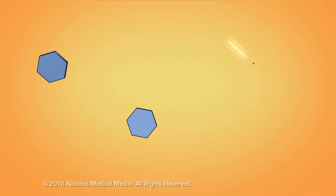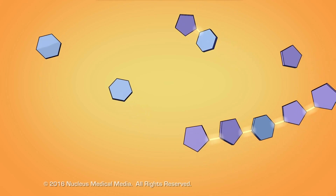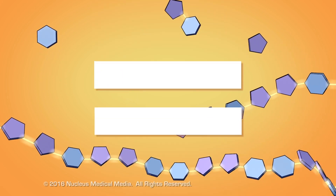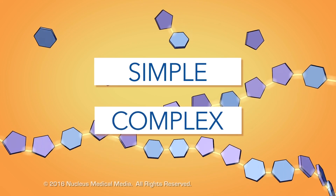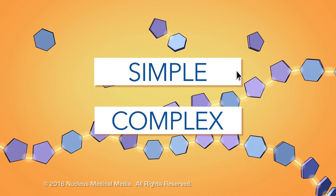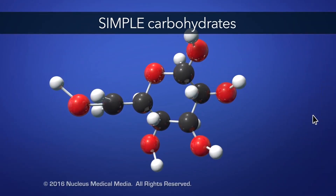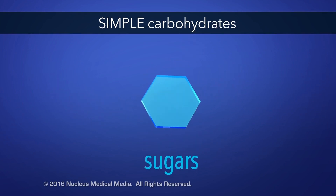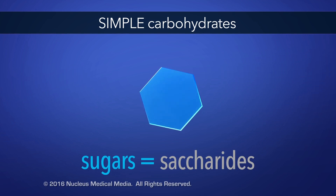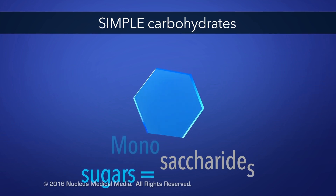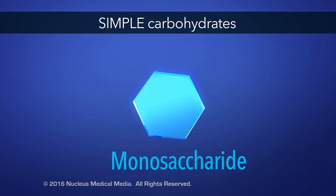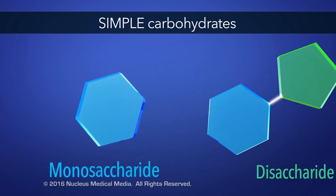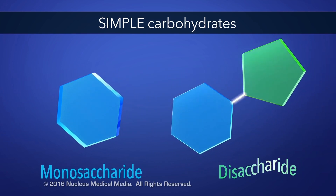Carbohydrates don't always have the same overall structure. They are classified as either simple or complex, based on their chemical structure. All simple carbohydrates are sugars, referred to as saccharides. A saccharide can be made of one sugar molecule, called a monosaccharide, or two sugar molecules, called a disaccharide.